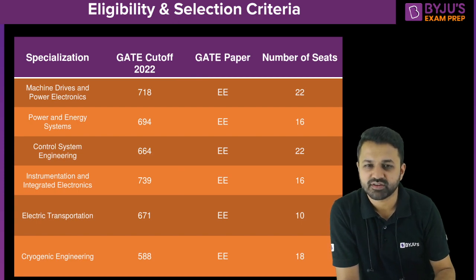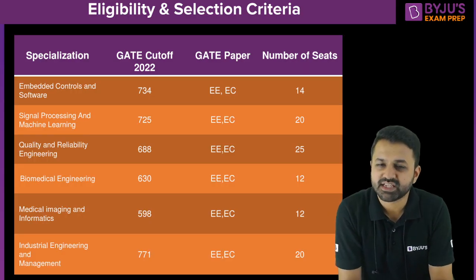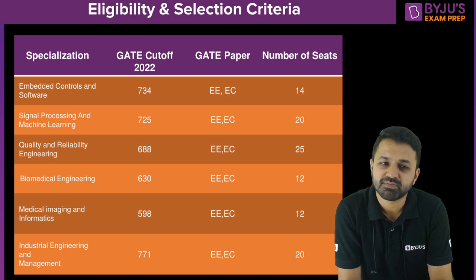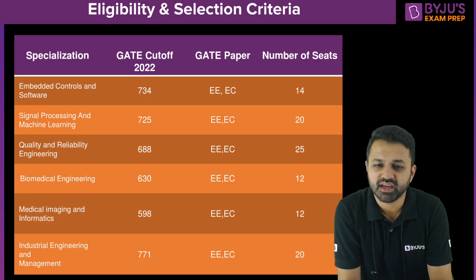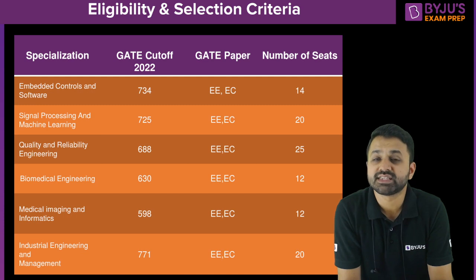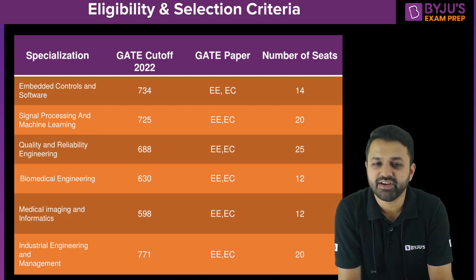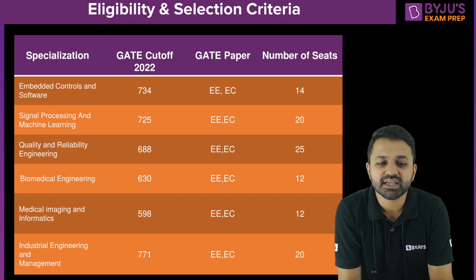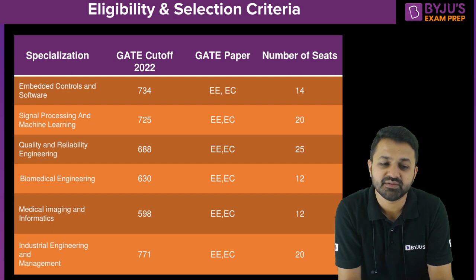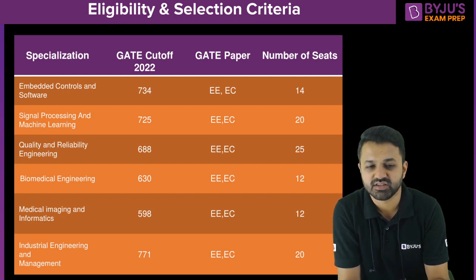Coming to the common branches open to both EE and EC students: Embedded Control and Software has a cutoff of 734, Signal Processing and Machine Learning is 725, Quality and Reliability Engineering is 680, Biomedical is 630, Medical Image and Informatics is 598, and Industrial Engineering and Management is 771.